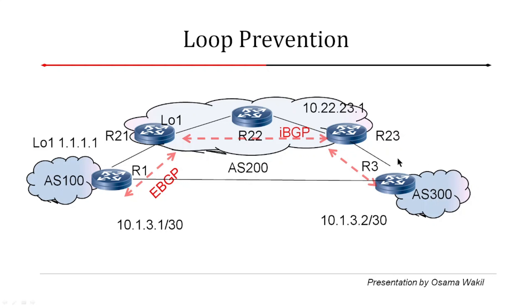There is another feature within the BGP protocol which is the AS path. We discussed the AS path attribute in a previous video. When router R1 advertises a prefix or route to its EBGP neighbor R21, it is going to append its own AS number to the AS path and send it to the neighbor.